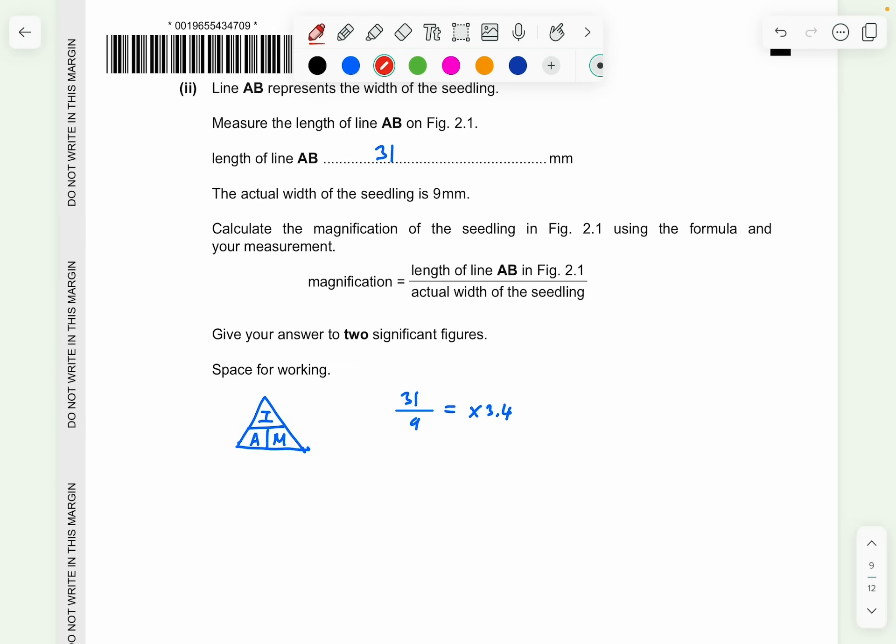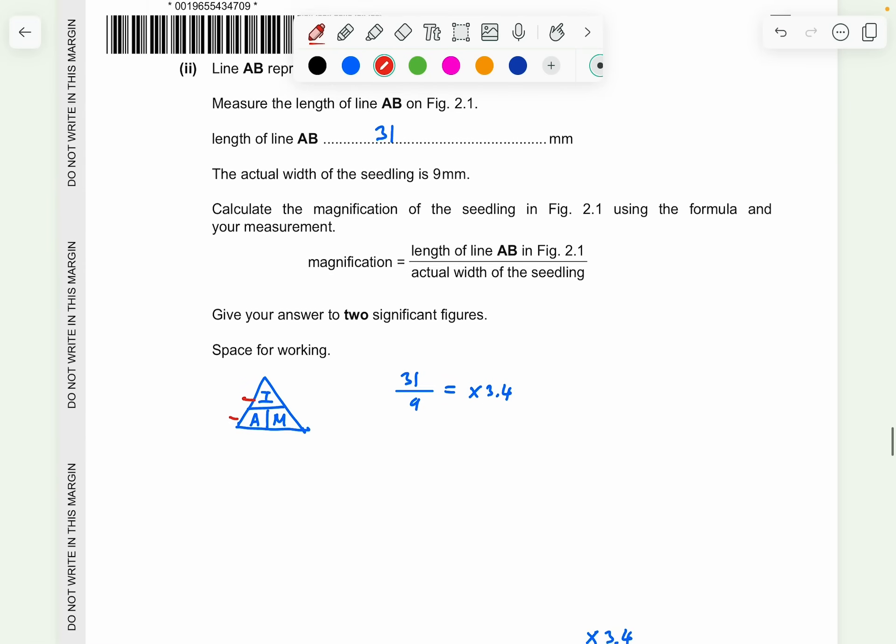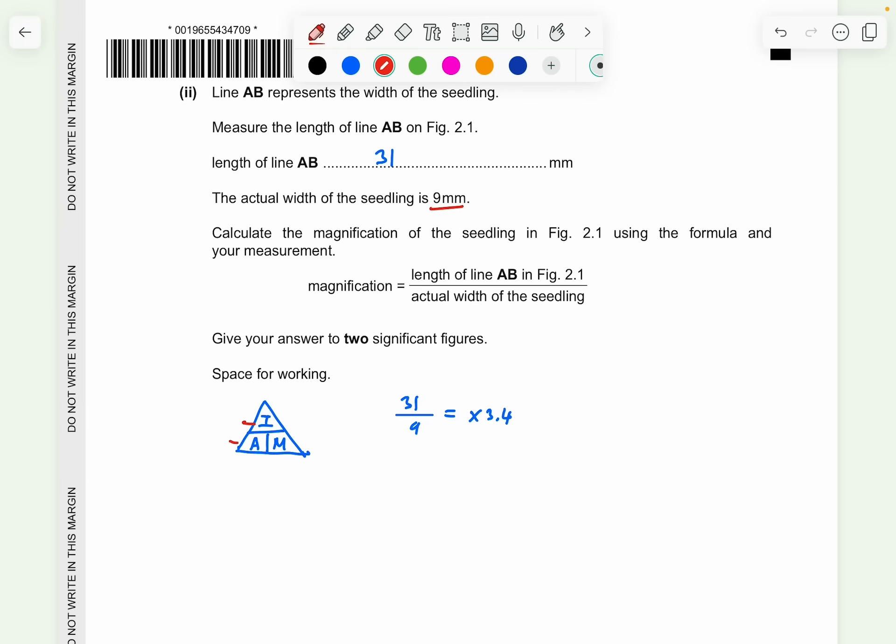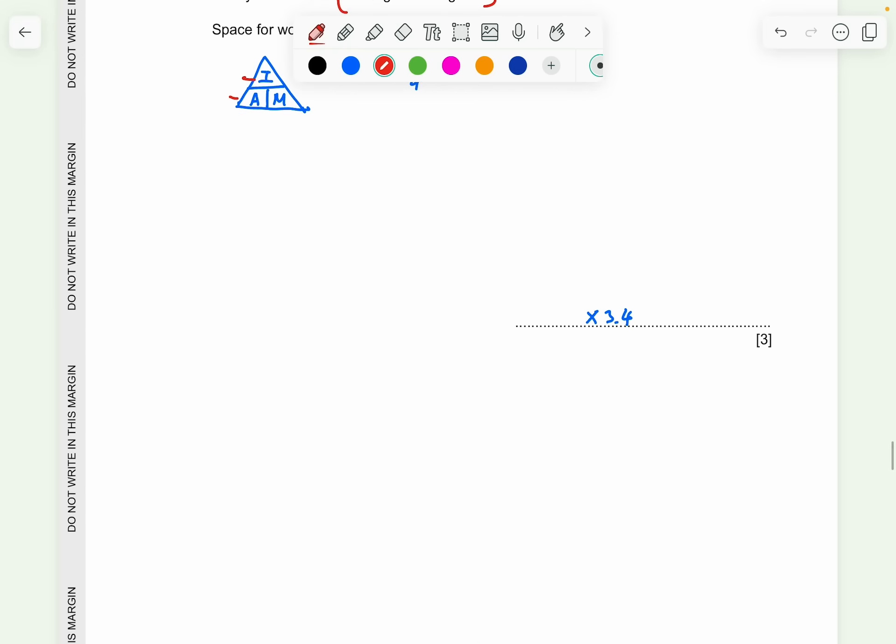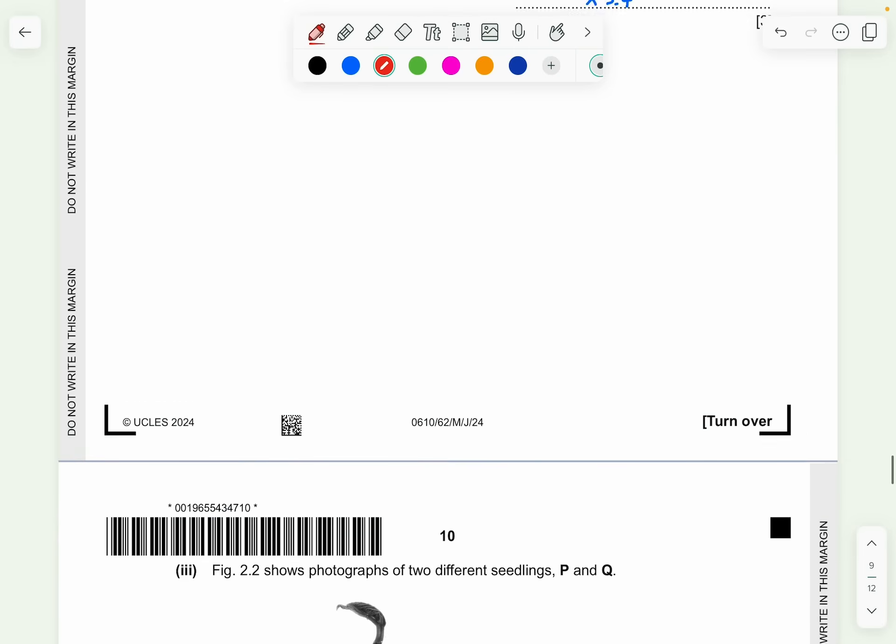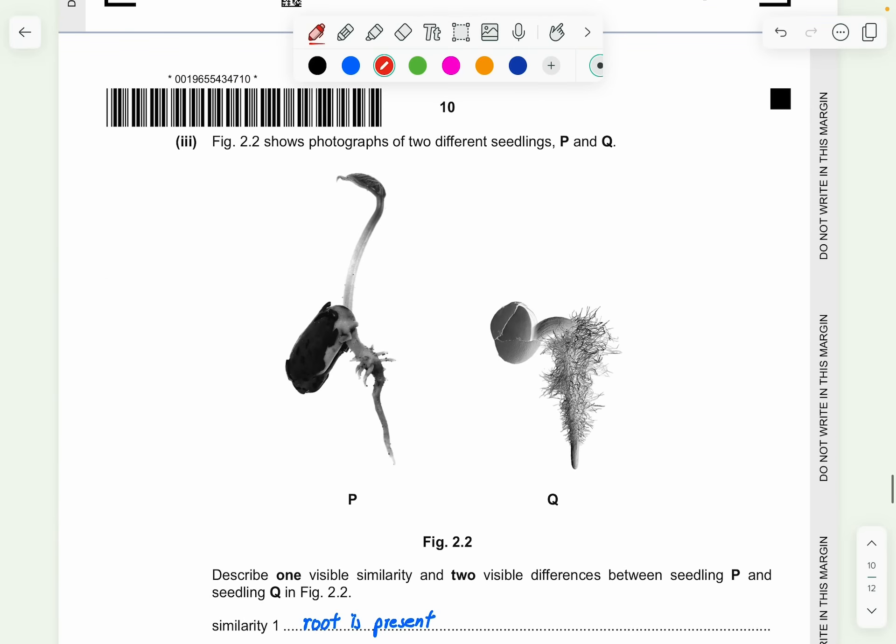Part 2. Line AB represents the width of the seedling. Measure the length of line AB on figure 2.1. So the length of the AB will be about 31 millimeters. And now you calculate the magnification is by using image over actual length. So you get 31 divided by 9. And you're going to get times 3.4. Because they want in two significant figures. So the answer is magnification of 3.4.